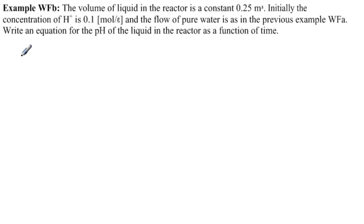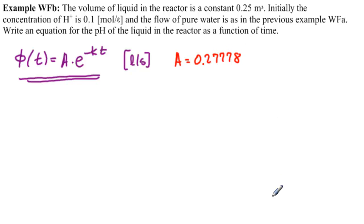If you recall, we had the flow of pure water as a function of time was an exponentially decreasing function, A times e to the minus kt. We had in liters per second, and we found that A was equal to 0.27778, and k was equal to 4.6 times 10 to the minus 4.